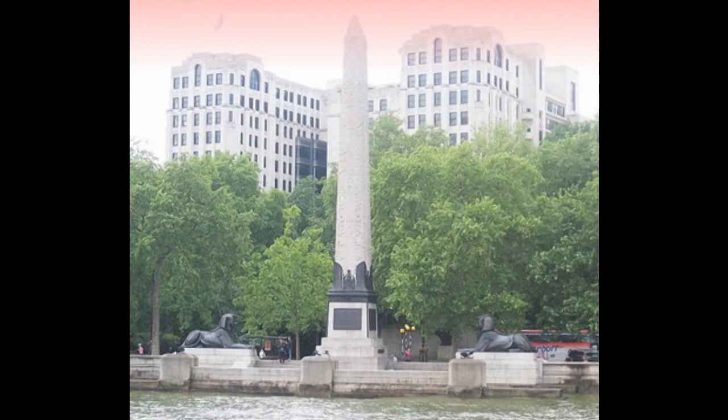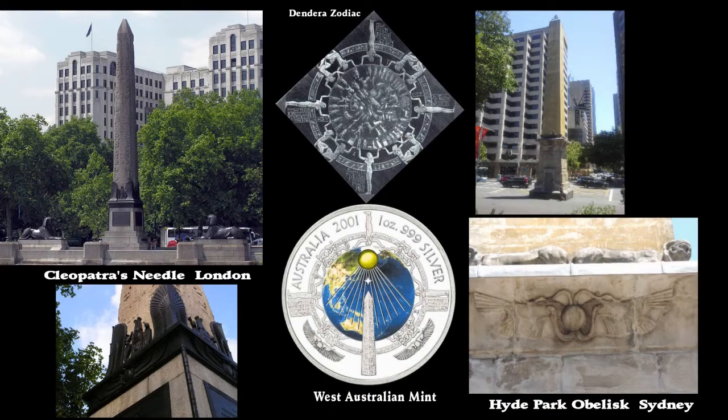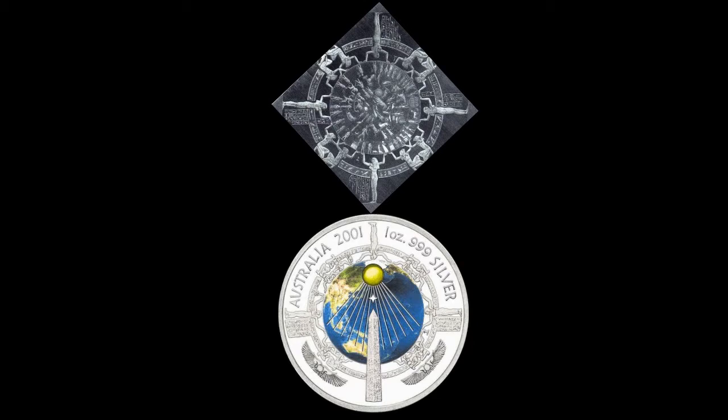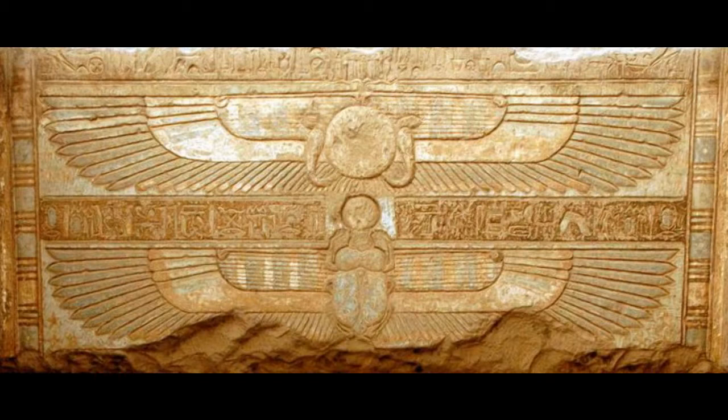The Sydney obelisk also features that winged disc. A coin was printed showing Cleopatra's Needle in London — an Australian coin — which also features the Dendara Zodiac, a nice connection. Robert Bauval has done excellent work on this, including accounts of how he challenged the establishment on certain findings.